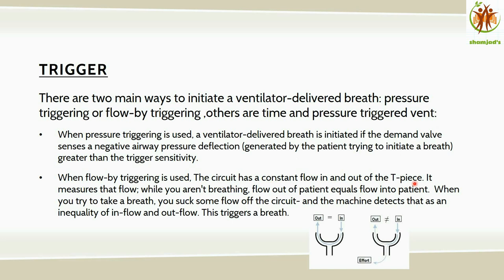With flow triggering, the circuit has a constant flow in and out. The machine measures that flow — when the patient is not breathing, flow out equals flow into the patient. When the patient tries to take a breath, they draw some flow from the circuit, creating an inequality between inflow and outflow. The machine senses this inequality and triggers a breath. You can see in the diagram the continuous inflow and outflow, and how patient inspiratory effort causes the imbalance that triggers ventilation.